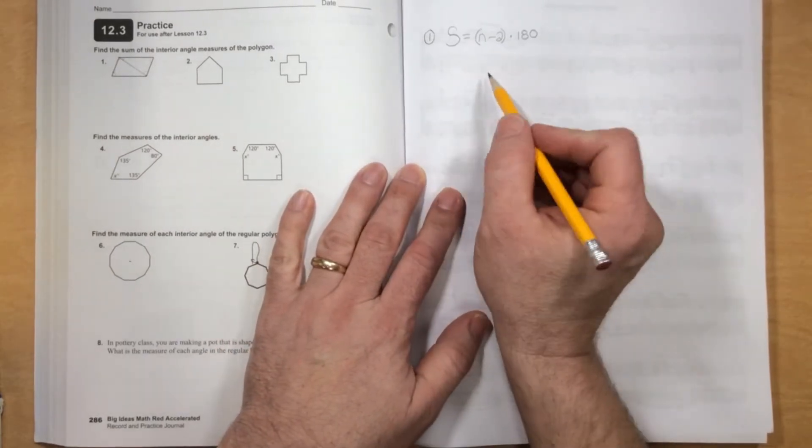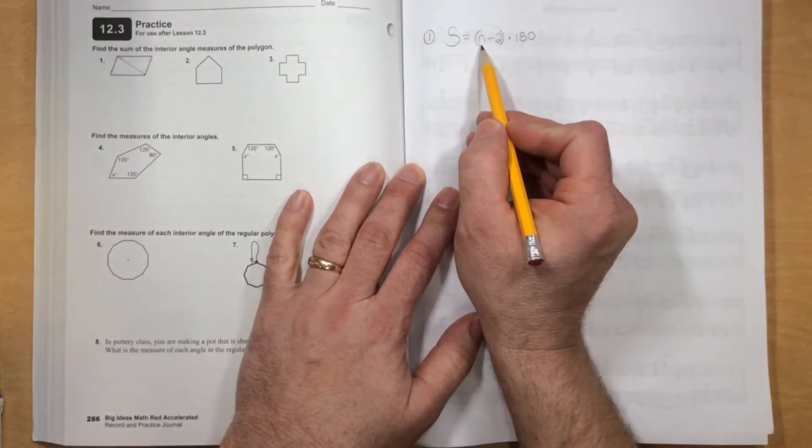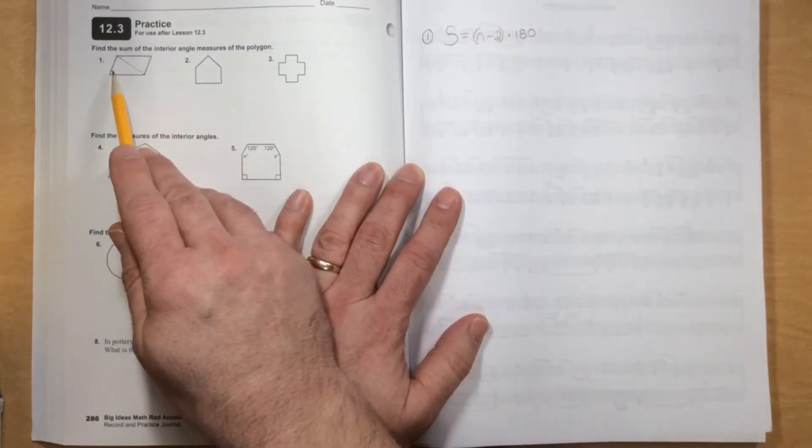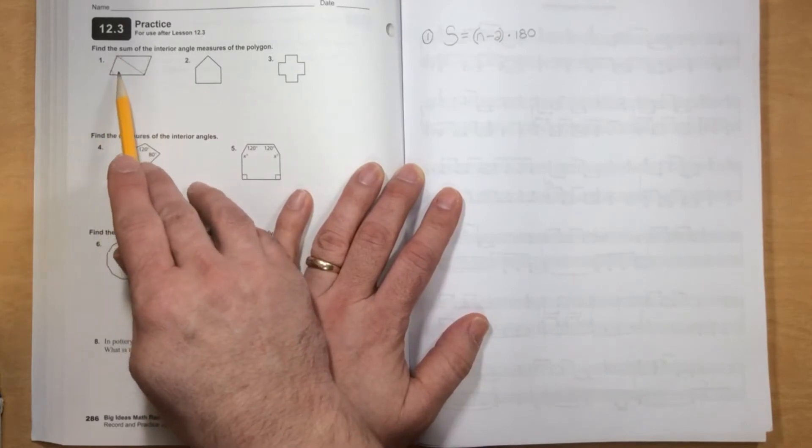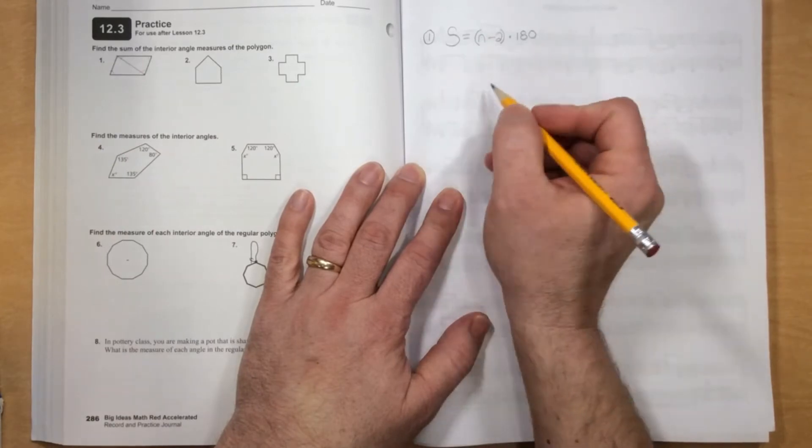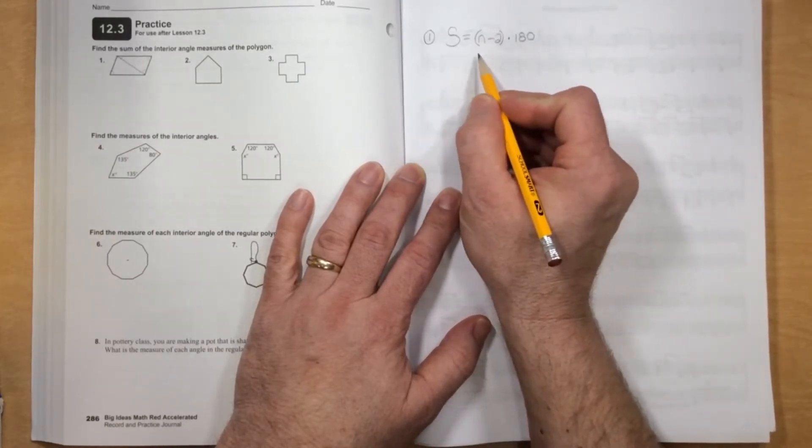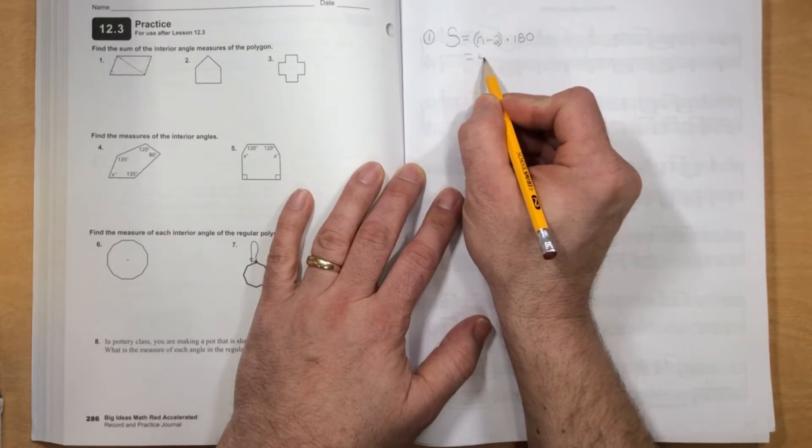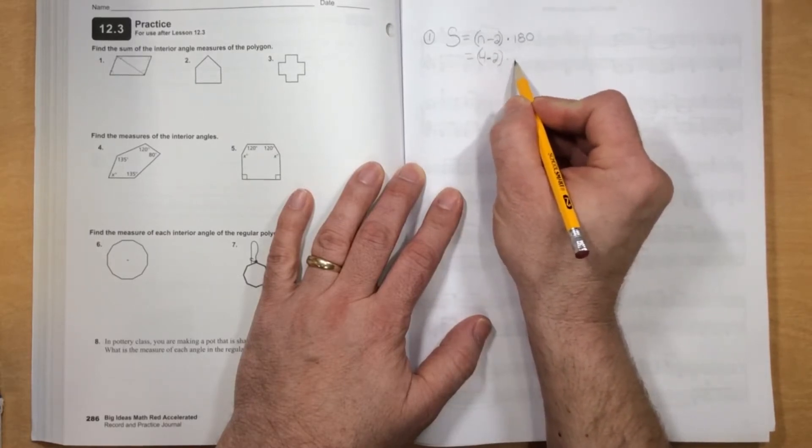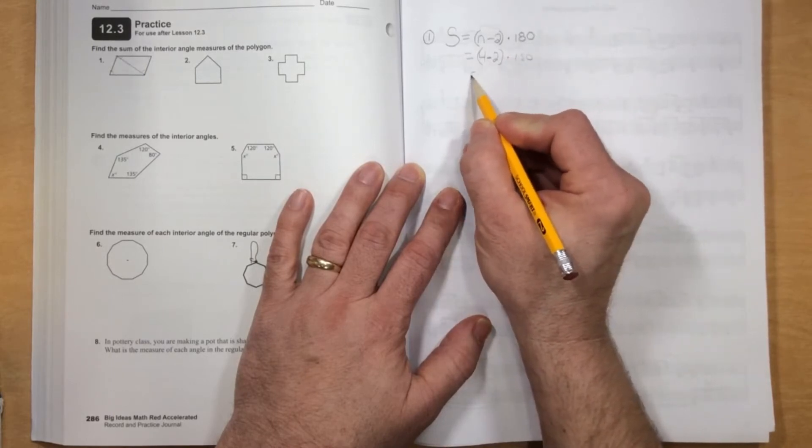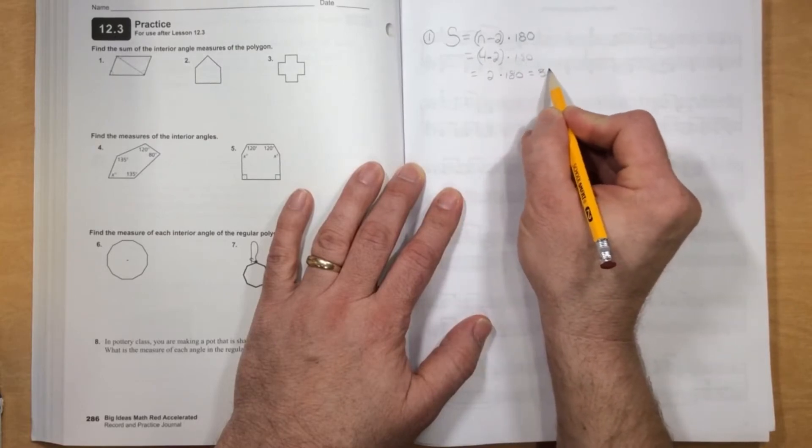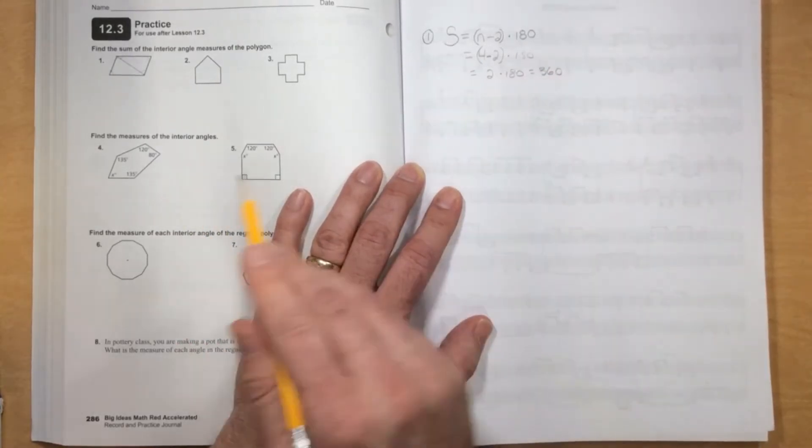That's what this formula actually does for us. It takes the number of sides and subtracts 2. What that's going to give us is how many triangles we actually can draw. So in this case, it would be 4 minus 2 because I can draw two triangles. The sum of the angles is going to equal 4 minus 2 times 180, which will be 2 times 180, which equals 360. We already knew that, but that's how we get it.